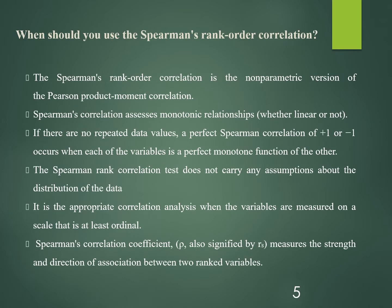When shall we use Spearman's rank order correlation? The Spearman correlation coefficient is represented by the symbol rho. It measures the strength and direction of association between two ranked variables, assessing monotonic relationships whether linear or not. It ranges from minus one to plus one, carries no distribution assumptions, and the data should at least be ordinal.